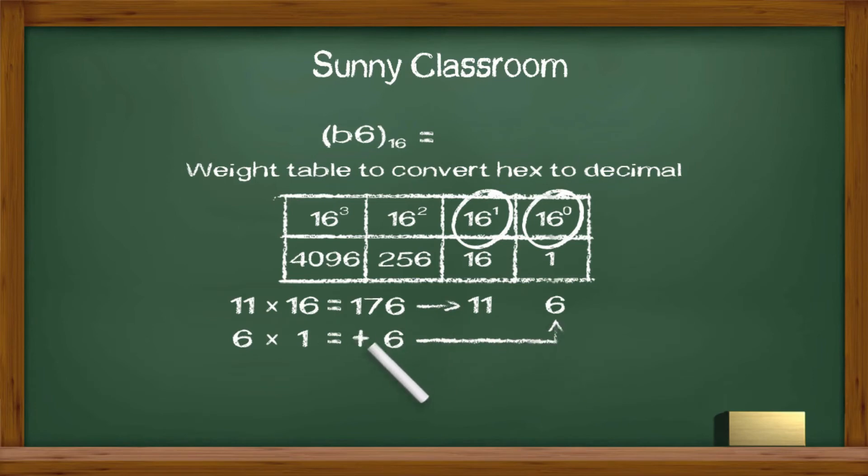6 times 1 because 16 to 0 power is 1 and we get 6. Last step, we add them up.